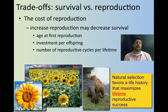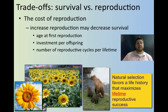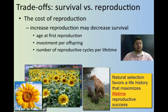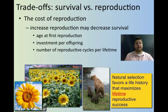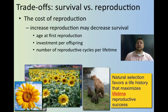This plays into the cost of survival versus reproduction. Different organisms have different life history strategies. The whole goal of life for most animals and plants is to produce the most offspring to the next generation — that's what evolutionary fitness is: getting the most genes onto the next generation.